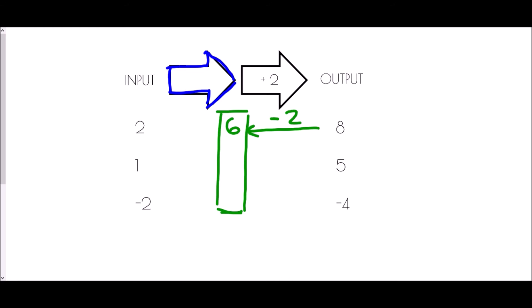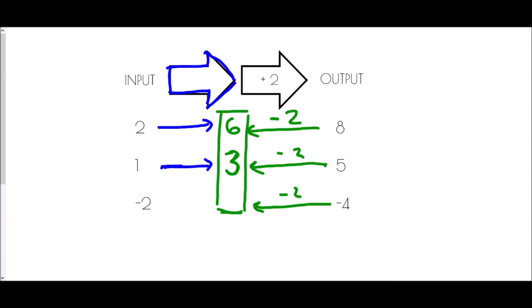I can't be sure until I check the other values. With the next output of five, subtract two gives three. Is there something common between turning two into six and one into three? Two times three is six, one times three is three — so times three works. Checking the last one: negative four take away two is negative six, and negative two times three is negative six. It works for all values, so the first part of the function machine is times three.